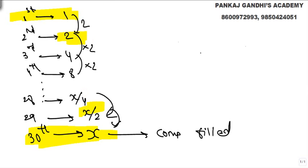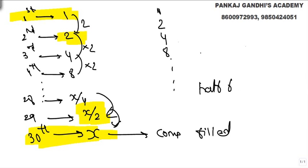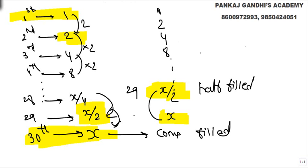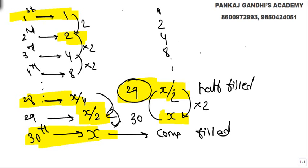Starting from one bacteria: one to two, two to four, four to eight — in how many days will it be half full? Obviously, it will just take one day: this day it is x by two, and it doubles to x. So the 30th day saves it. The answer is simply 29 days — the dish will be half full on day 29. Had it been quarter full, the answer would have been 28. But we need half full, so 29 days.